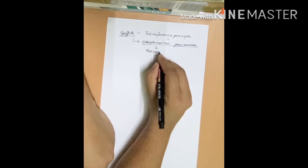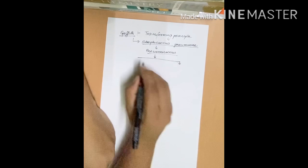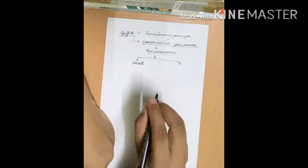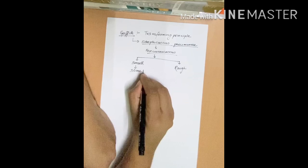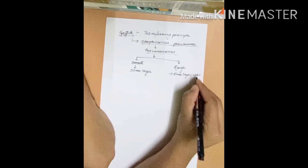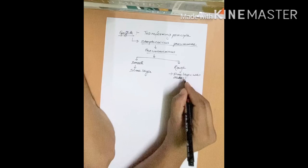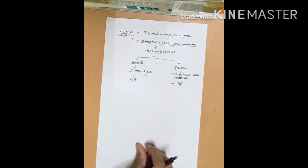When Griffith was studying pneumonia he found that the patient sample contained two different types of bacterial colonies. He found that certain colonies were smooth due to the presence of a slime layer, while other colonies appeared rough in texture due to the absence of the slime layer. This slime layer led to the naming of the bacteria as S3 and R2 strains, and the slime layer was responsible for the toxicity.